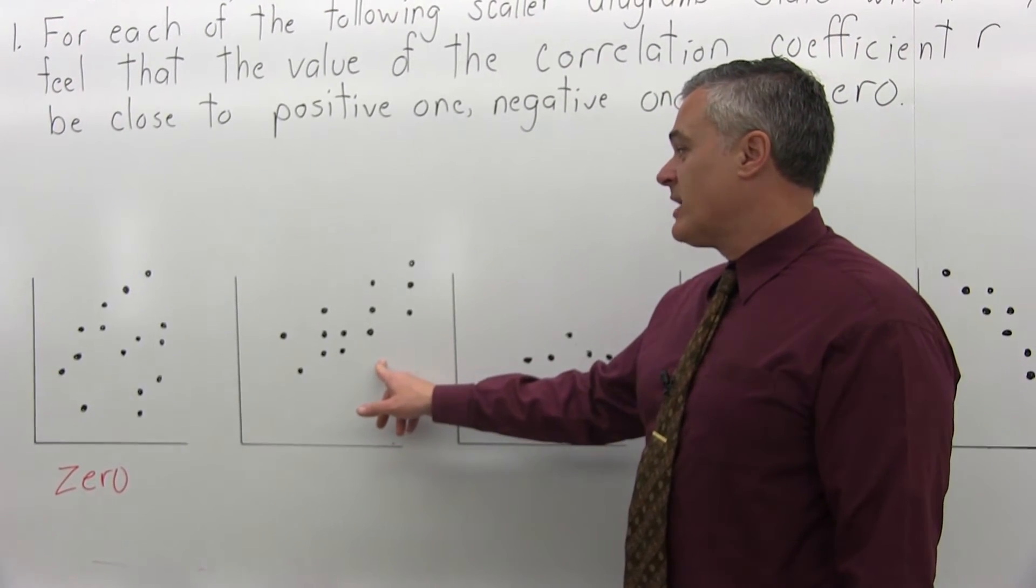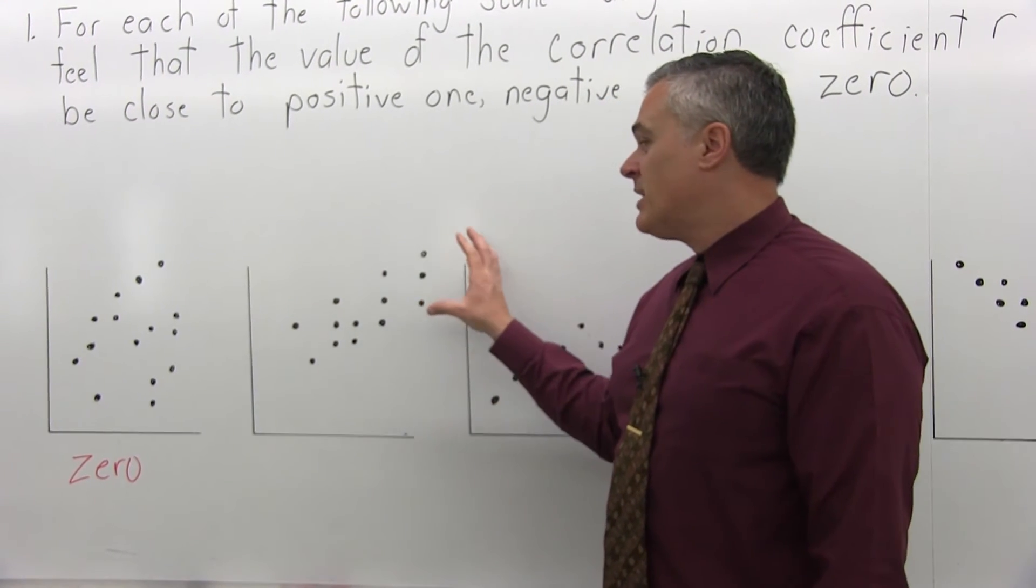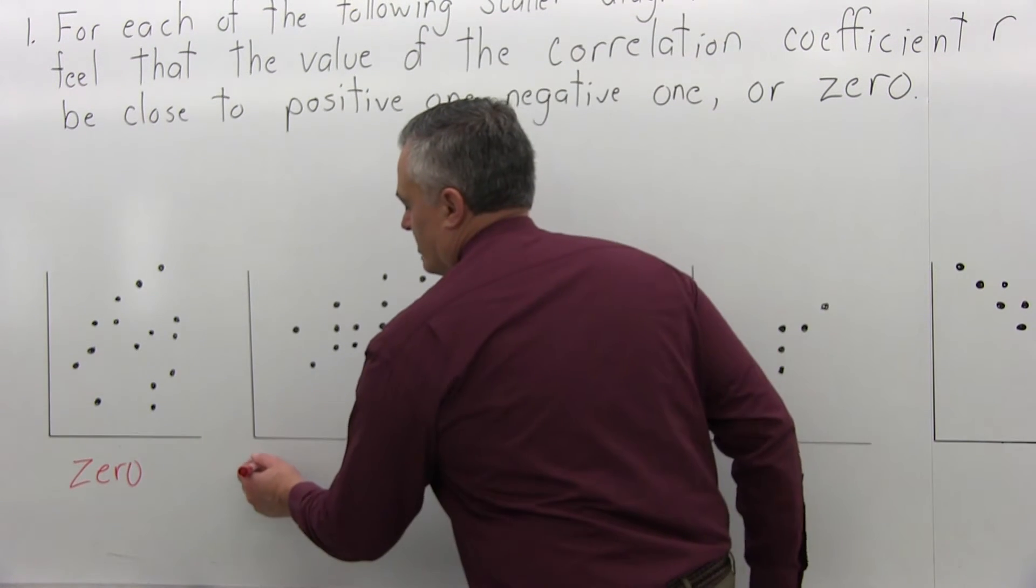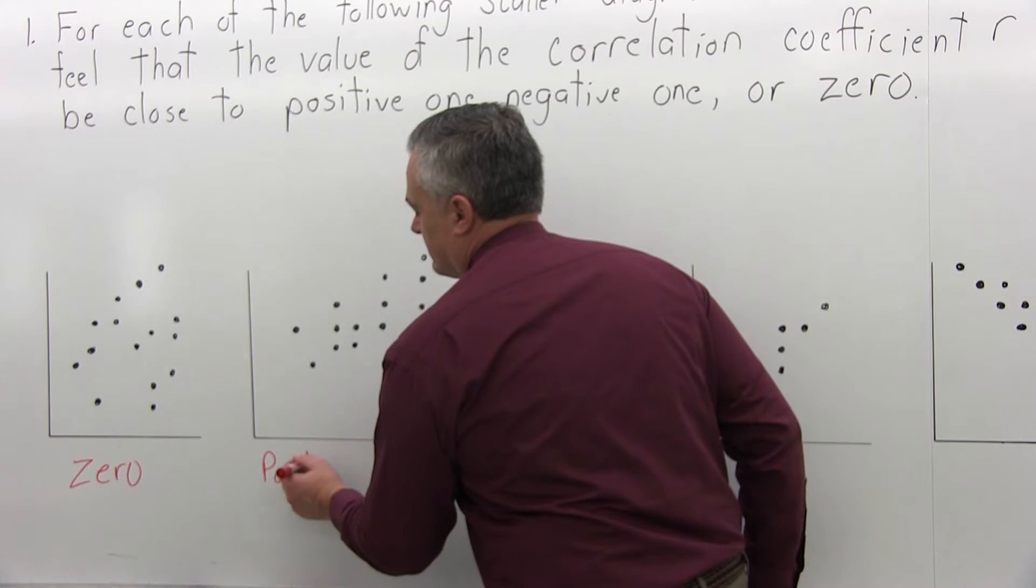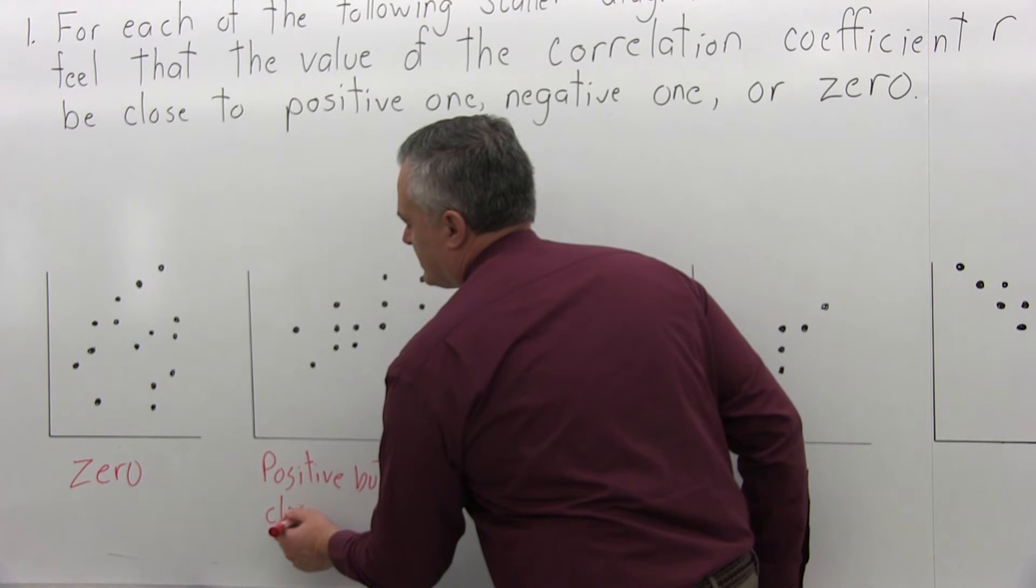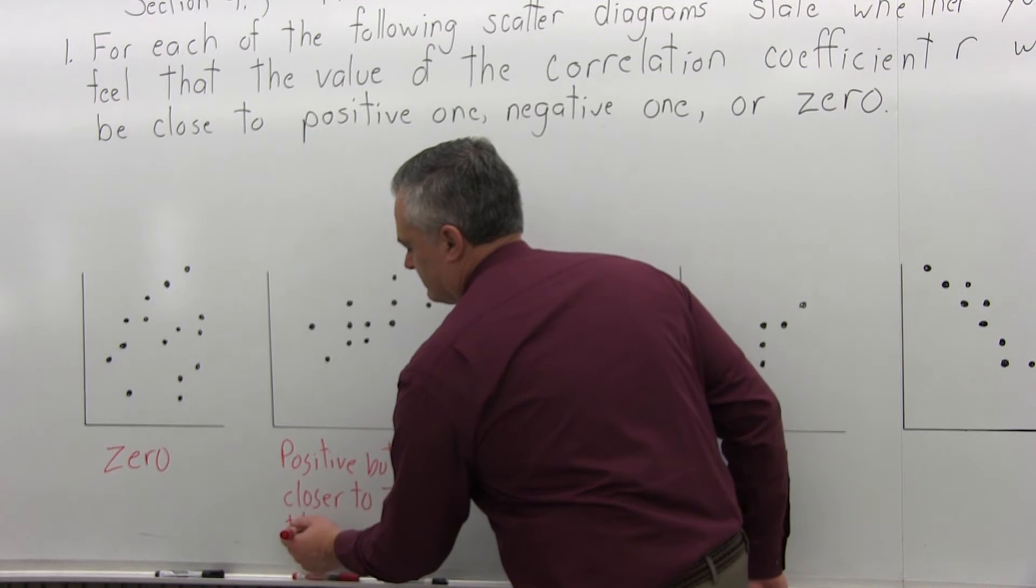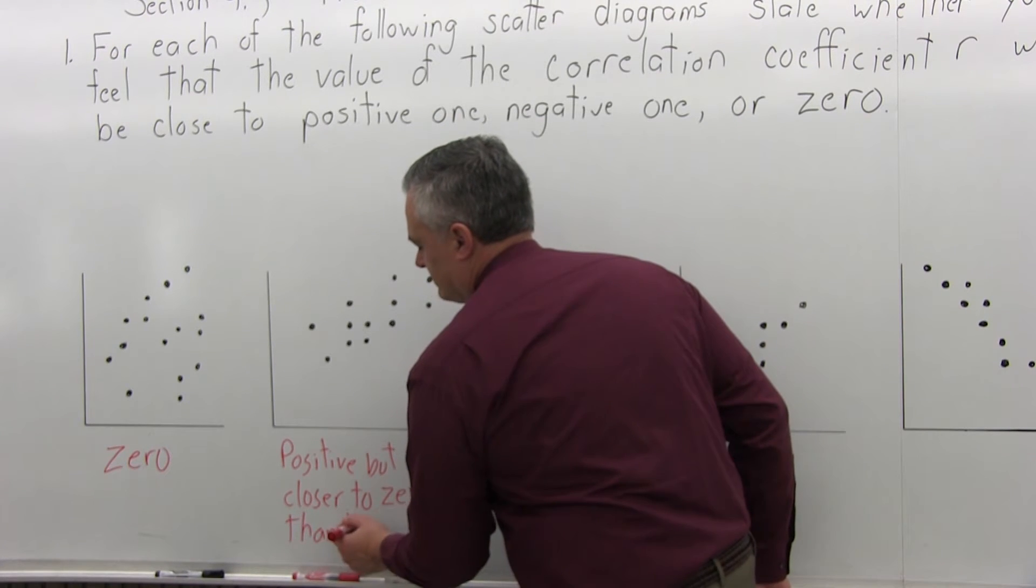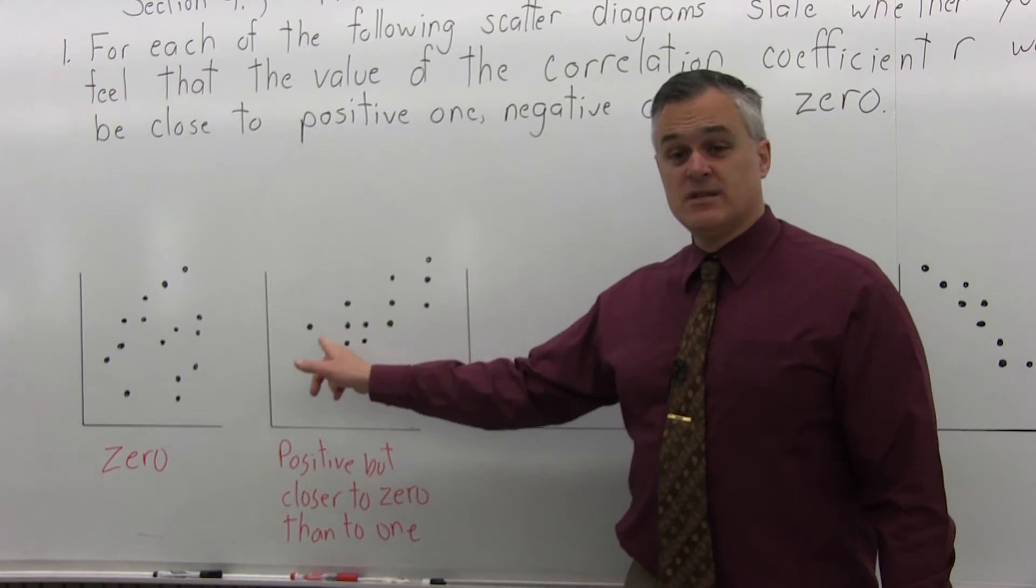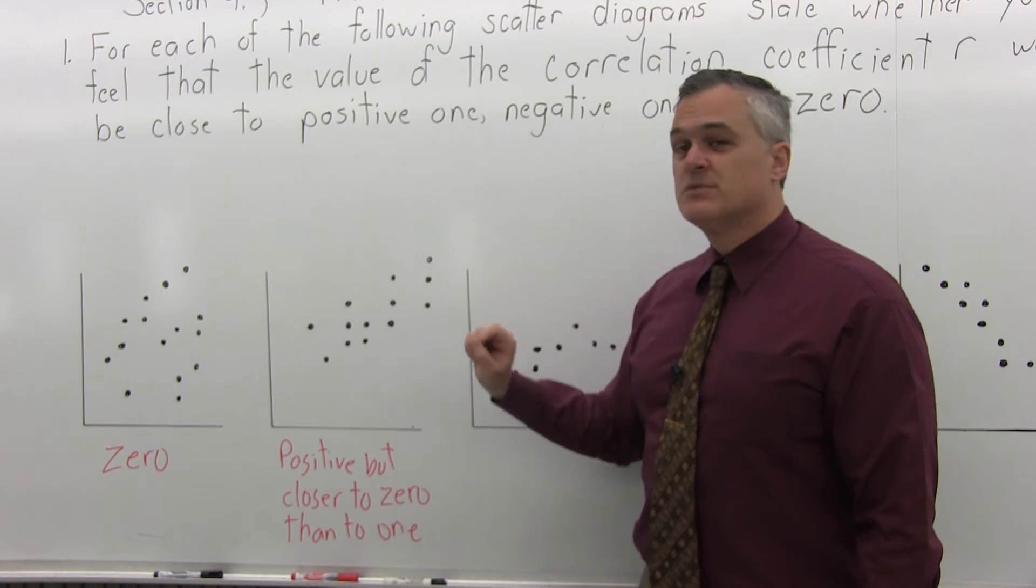The second scatter diagram, there is a linear tendency that goes up as you go from left to right, but it is pretty spread out. So I'm going to say it will be positive, but closer to 0 than to 1. Again, you can see the line goes up as you go from left to right, but it's somewhat spread out.